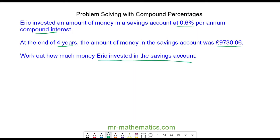To begin with, we're going to calculate the multiplier, which is the original 100% added to the interest rate, which is 0.6%. So we have 100.6% of the original value. As a multiplier, we divide it by 100 and we get 1.006. So this is our multiplier.